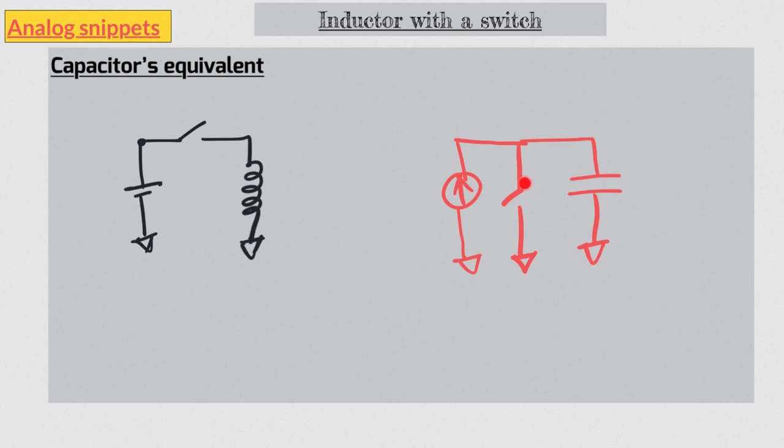This is because in this ideal case the voltage across capacitor disappears instantaneously and it can only happen with an impulse current. But let's be more practical.